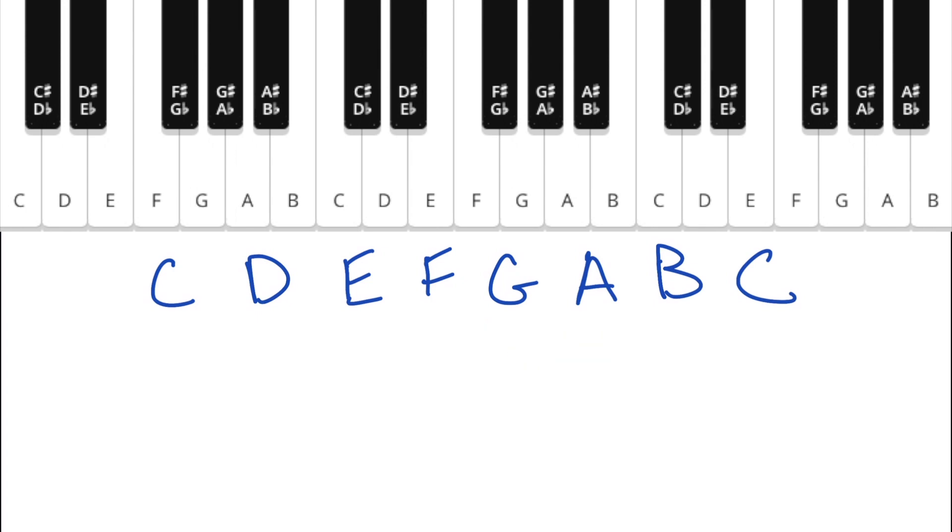Now to understand what makes a major scale sound like a major scale, let's look at the half steps and whole steps between each of these letters. So between C and D do we have a half step or a whole step? Well C and D are separated by one note so this is a whole step. What about between D and E? Again these two notes are separated with one note in between them so this is going to be a whole step.